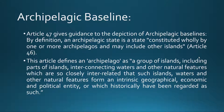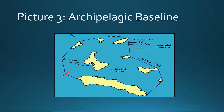Now we are going to archipelagic baseline. Article 47 gives guidance to the depiction of archipelagic baseline. By definition, an archipelagic state is a state constituted wholly by one or more archipelagos and may include other islands, as provided in Article 46. This article defines an archipelago as a group of islands including parts of islands, interconnecting waters and other natural features which are so closely interrelated that such islands, waters and other natural features form an intrinsic geographical, economic and political entity, or which historically have been regarded as such. In picture number 3, we are seeing an archipelagic baseline — from point A to point B to point C — measured from one end of one island to another end of another island. All the islands under the control of a country can be used to create an archipelagic baseline.